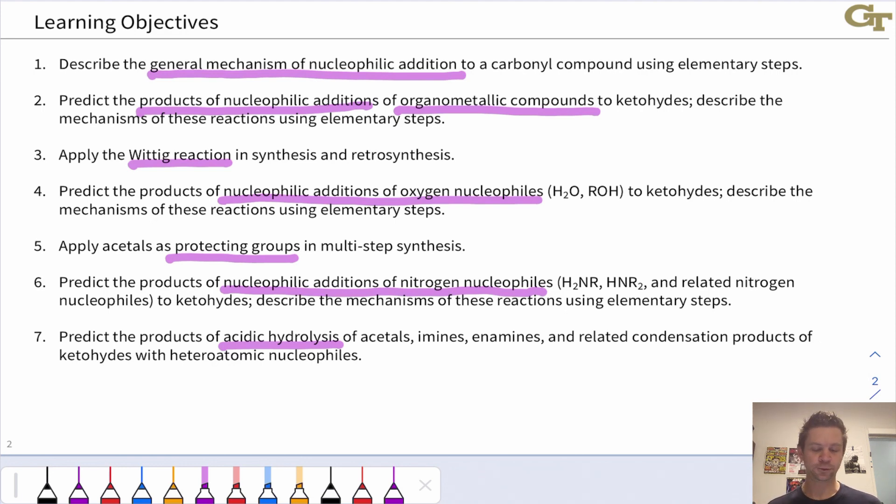We'll look at nitrogen nucleophiles, which lead to imines and enamines via addition followed by substitution. These are highly analogous to the oxygen nucleophiles mechanistically speaking, but have a couple of differences as a result of the additional hydrogens linked to the nitrogen and the fact that nitrogen is more nucleophilic than oxygen generally.